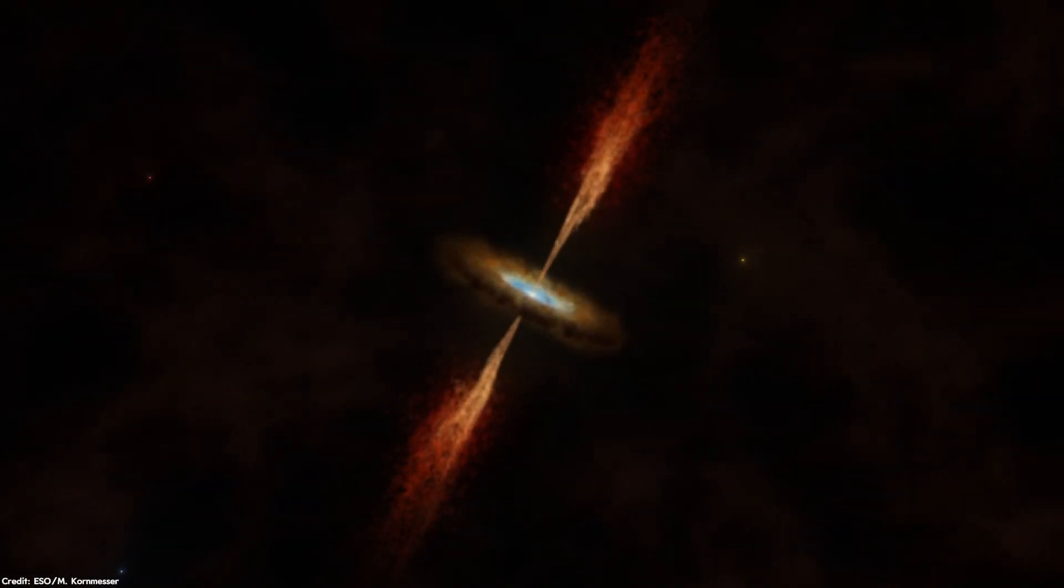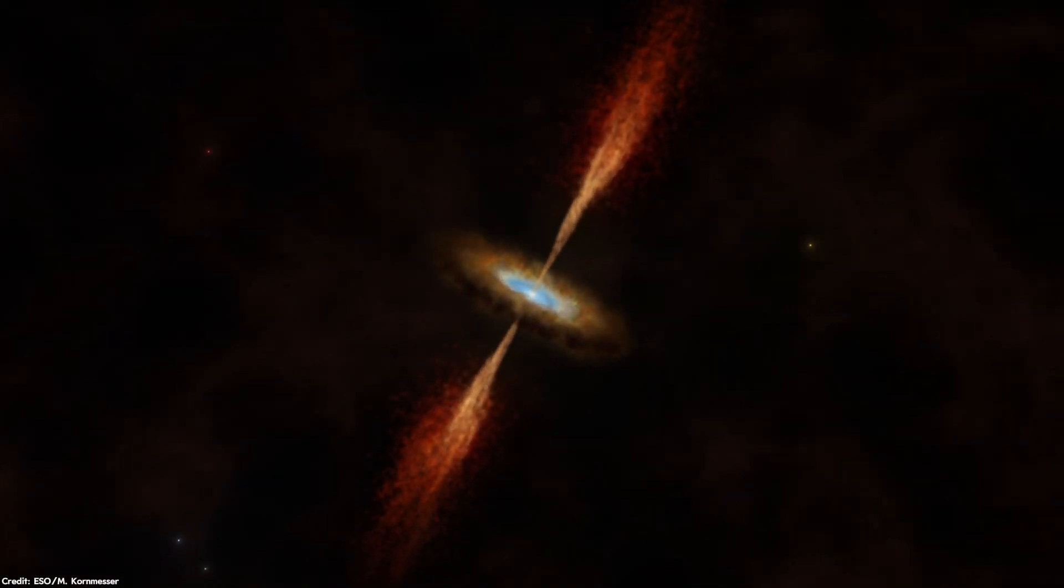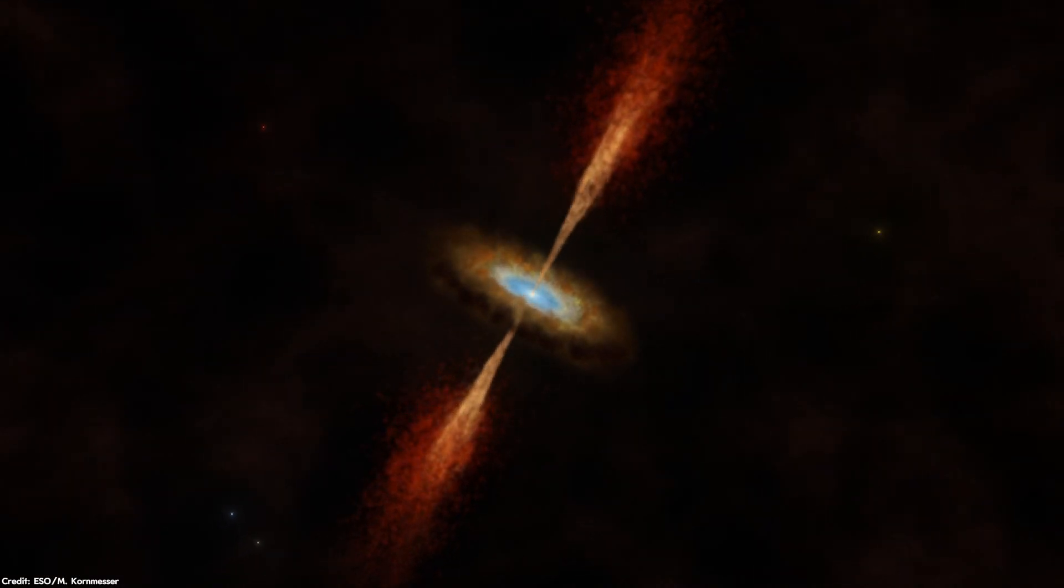One possibility is a bipolar outflow. Picture jets of material erupting from the star's poles, sculpting the dust into this elongated shape. Supporting this idea are observations of OH-Maser emissions, which often indicate the existence of these kinds of outflows.